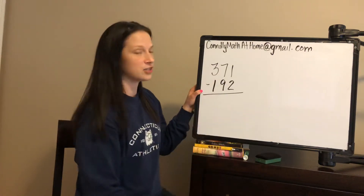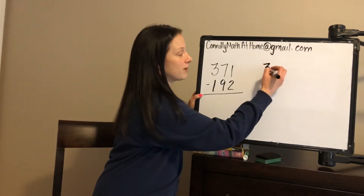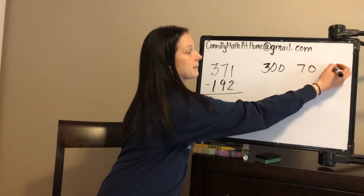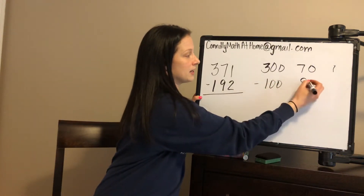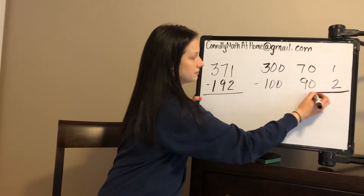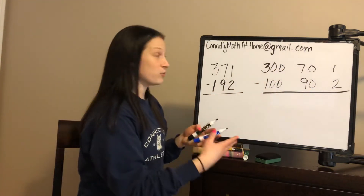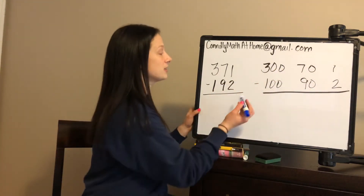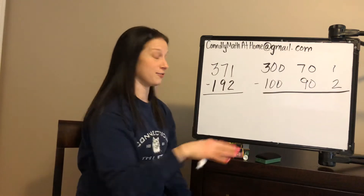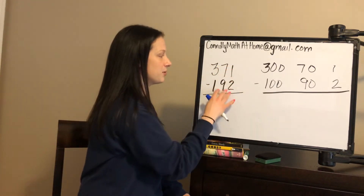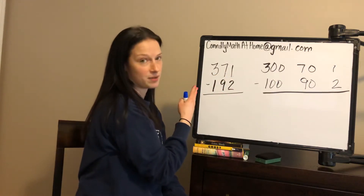So 371 minus 192 is what we're going to start with first. In order to help you understand, I'm going to show you what's happening with place value and I'm going to be writing what we're doing in expanded form over here. So 371 minus 192. It's important to remember your place values are lined up perfectly: 1s under 1s, 10s under 10s, 100s under 100s. It has to be lined up by place value.